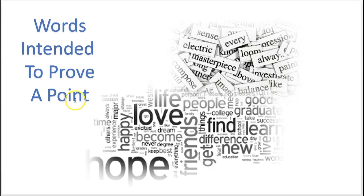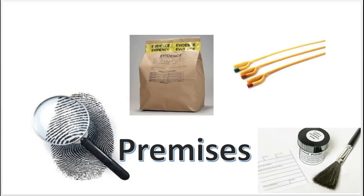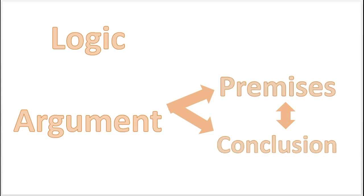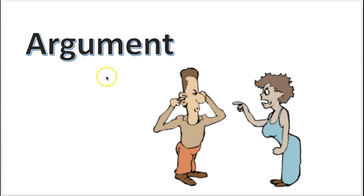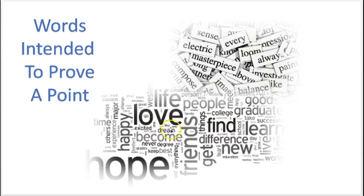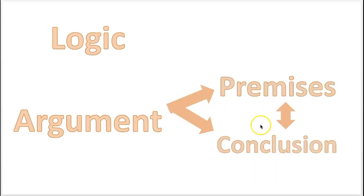So an argument is words that are used to prove a point. If somebody is using words to communicate something with the intention of proving a point, that is an argument. Next we're going to learn what a premise is. We learned that logic is the science of evaluating arguments, and arguments are words used to prove a point. Now we're going to go into premise and conclusion. A premise is evidence in the argument — evidence to prove the point. An argument can be broken down into two pieces, two categories: the premise and the conclusion.